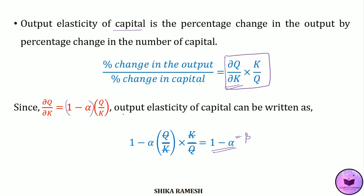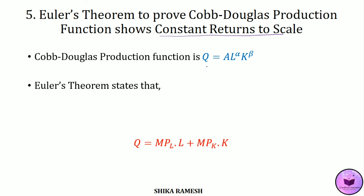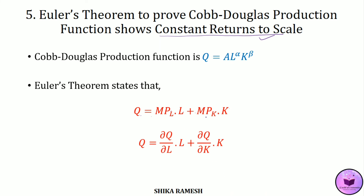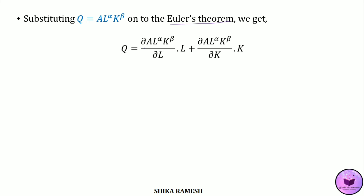The next property is using Euler's theorem to prove that the Cobb-Douglas production function shows constant returns to scale. Euler's theorem states that if each factor input is paid rewards equal to its marginal productivity, then the total product will get exhausted — this holds for a production function implying constant returns to scale. This is represented as Q = MPL·L + MPK·K, or Q = (∂Q/∂L)·L + (∂Q/∂K)·K. Substituting the Cobb-Douglas function, we get Q = (∂AL^α K^β/∂L)·L + (∂AL^α K^β/∂K)·K.